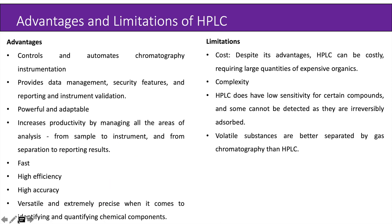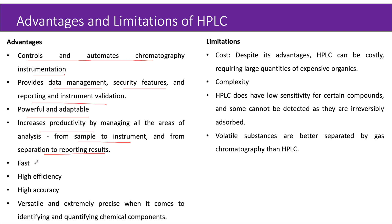Advantages and limitations of HPLC. Advantages include: it controls and automates chromatography instruments; it provides data management, security features, reporting and instrument validation; it is a very powerful and adaptable technique; it increases productivity by managing all areas of analysis from sample to instrument and from separation to reporting results; it is fast, has high efficiency and accuracy, and is versatile and extremely precise when identifying and quantifying chemical components. Limitations include cost — HPLC can be costly, requiring large quantities of expensive organics. HPLC also has low sensitivity for certain compounds, and some compounds cannot be detected as they are irreversibly absorbed. Volatile substances are better separated by gas chromatography than HPLC.